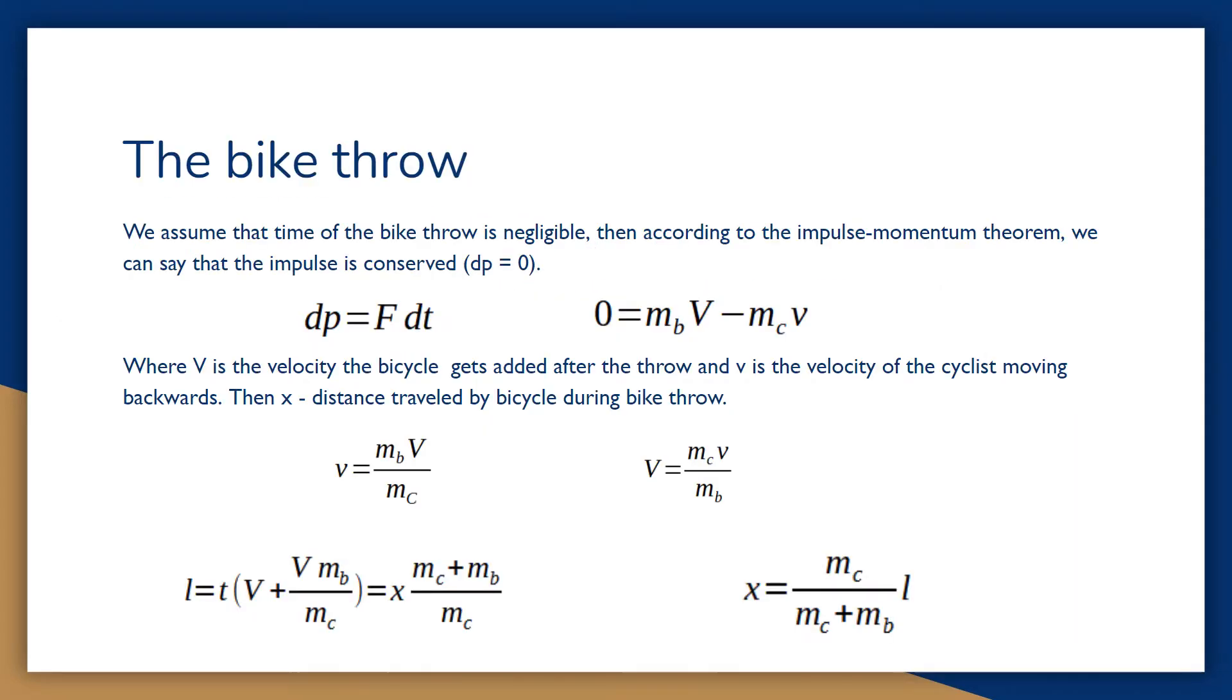We assume that time of the bike throw is negligible. Then, according to the impulse-momentum theorem, we can say that the impulse is conserved. Thus, you can imagine that a bicycle moves at a constant speed for some time. Then, for simplicity, let's take a frame of reference that will move at this speed. From the law of conservation of momentum, we obtain the following equations, where V is the velocity the bicycle gets after the throw, and v is the velocity of the cyclist moving backwards. Then x is the distance traveled by bicycle during bike throw.